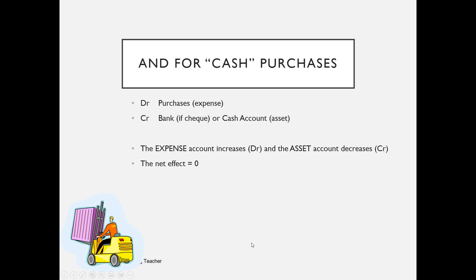For cash purchases, we're debiting purchases — that's an expense account — and we're crediting bank if it's a cheque or bank transfer, or cash if we've paid in cash. So the expense account 'purchases' is increasing on the debit side, and the asset — bank or cash — is reduced on the credit side.